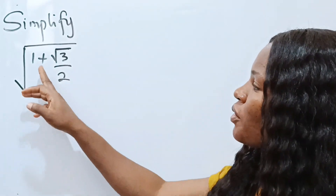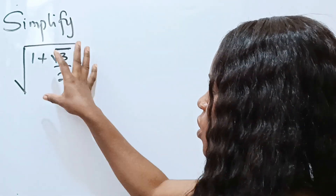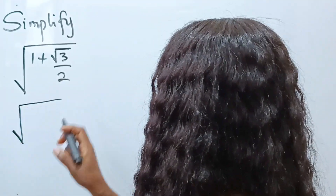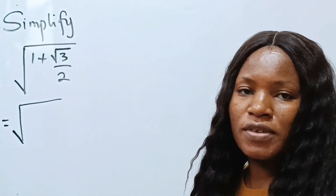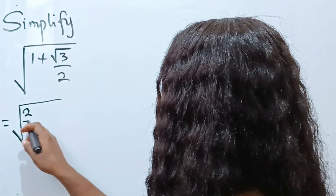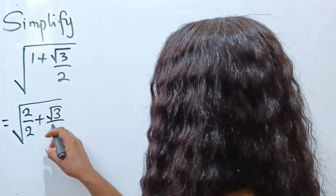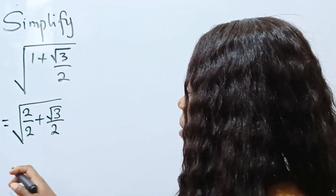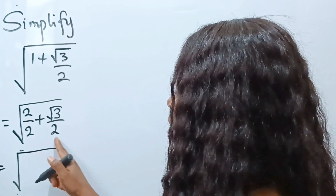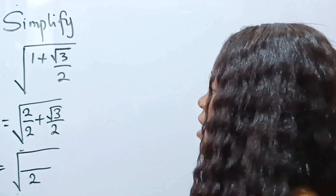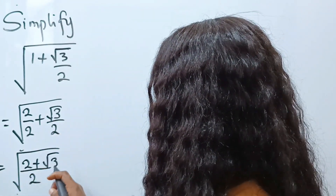Let's simplify what we have on the board. First, let's concentrate on what we have under the root sign. This is equal to the square root of 1, written as 2 divided by 2, because we want the same denominator. So 2 divided by 2 plus root 3 divided by 2 — that means this equals the square root of 2 plus root 3, all over 2.